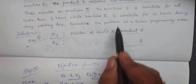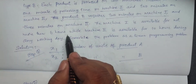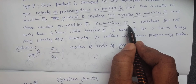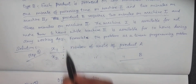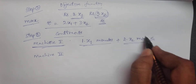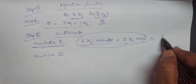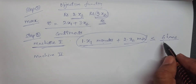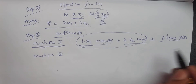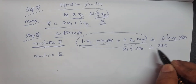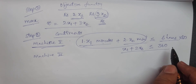Machine 1 is available for not more than six hours, meaning the maximum working time per day is six hours. Since processing time is in minutes, six hours is converted to 360 minutes. Therefore, constraint one is: X1 + 2X2 ≤ 360.